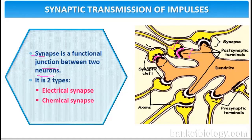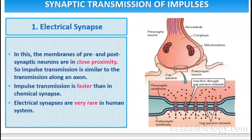Transmission of the impulse is with the help of electricity or with the help of the chemical acetylcholine. Based on this, synapse is divided into two types: electrical synapse and chemical synapse. In electrical synapse, the membranes of pre- and post-synaptic neurons are in close proximity.